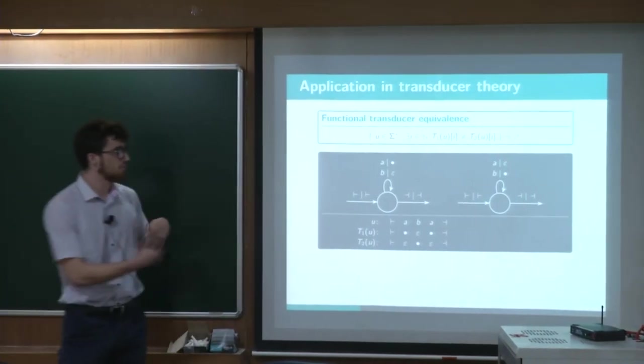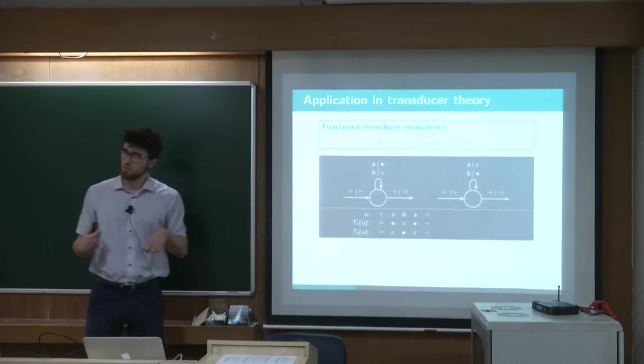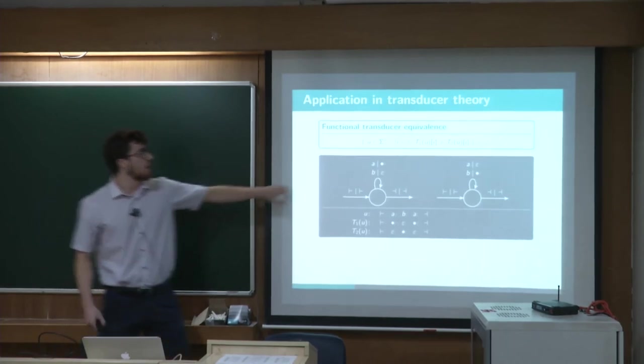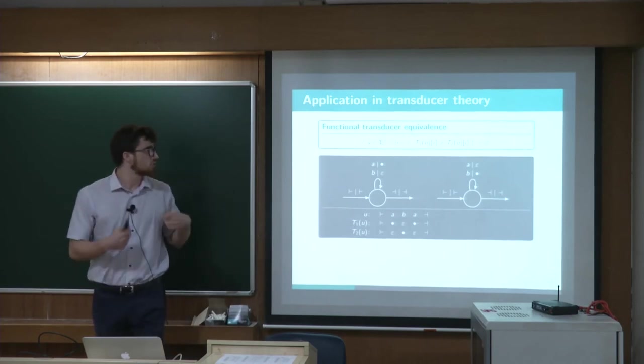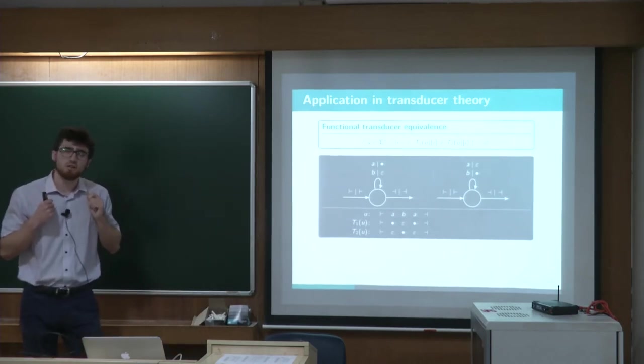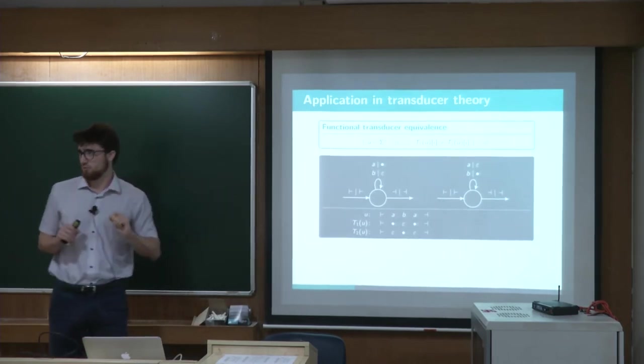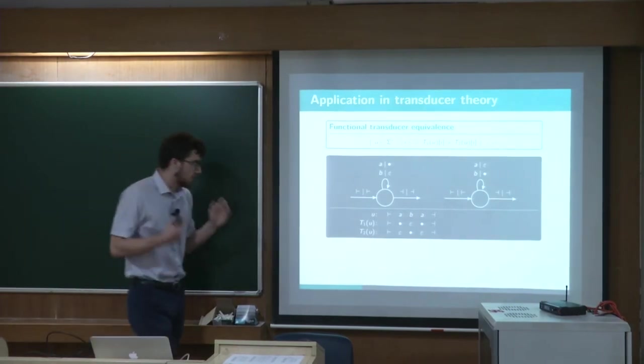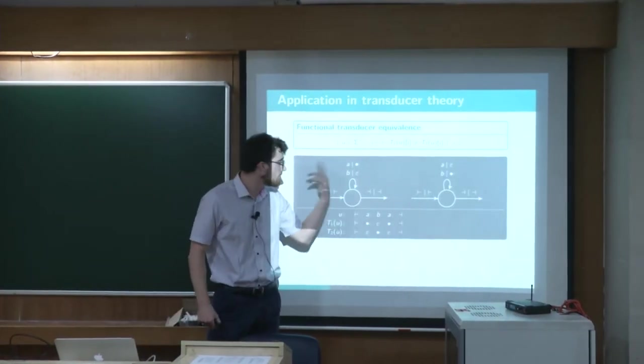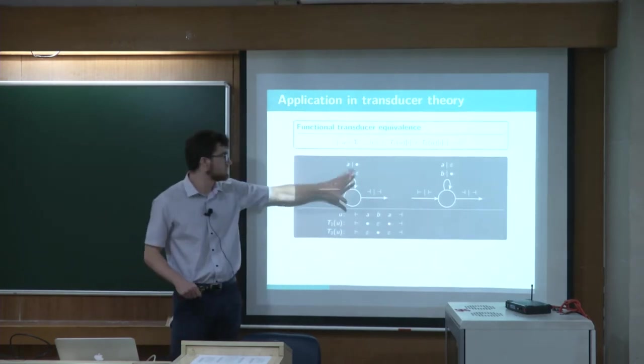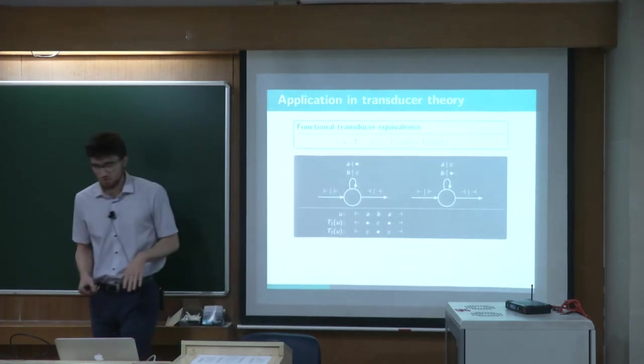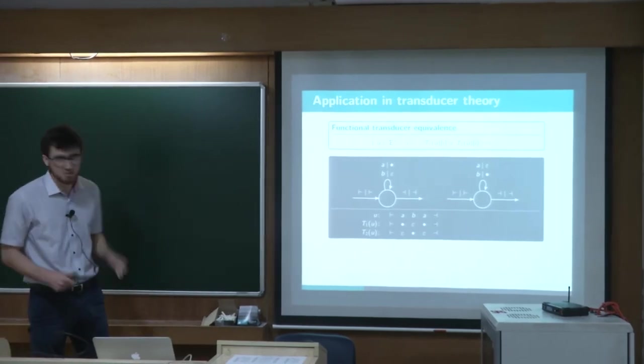But you can see that they have not been produced at the same moment of the computation. And this is because our transducers are not letter to letter. We said that those transducers don't have synchronized outputs. So anyway, if I take I equal three, then I will obtain my mismatch. And then that shows that those two transducers are not equivalent in detail.